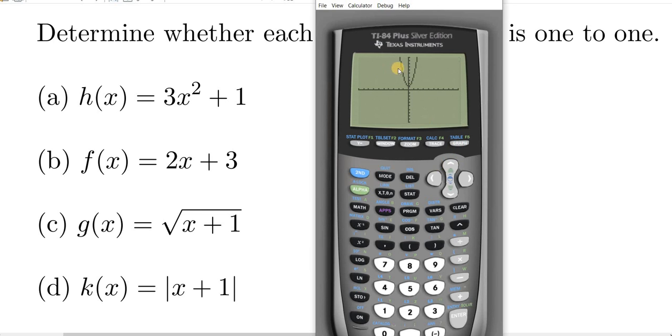And then just think, if you draw a horizontal line here, it will cross twice, so this function is not one to one.